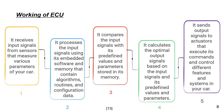The ECU first receives input signals from sensors that measure various parameters of your car, mounted on various parts of the vehicle. Then it processes the input signals using its embedded software and memory containing algorithms, routines, and configuration data. It compares the input signals with predefined values and parameters stored in memory, then calculates optimal output signals. Finally, it sends the output signals to actuators that execute its commands and control different features and systems in your car.